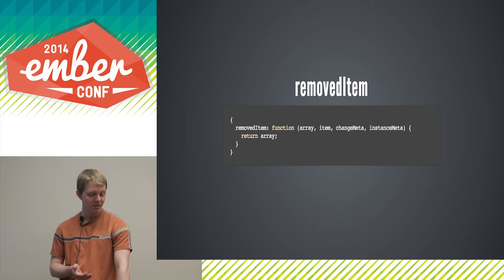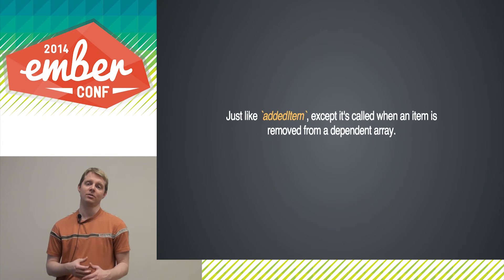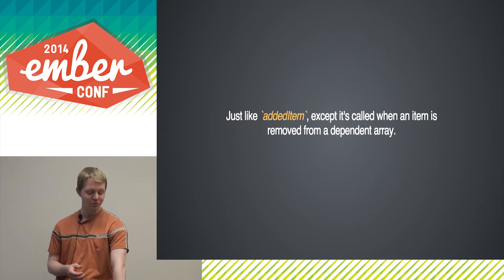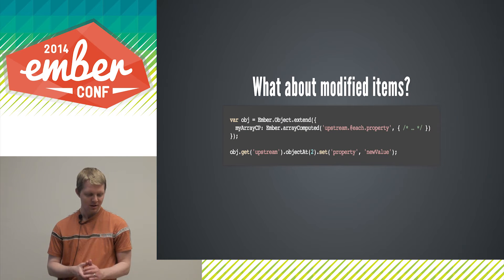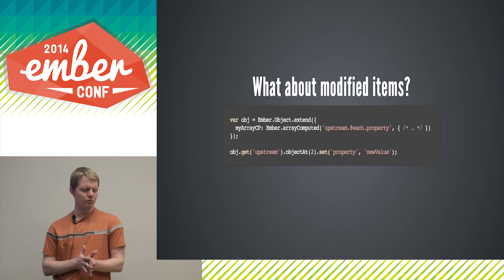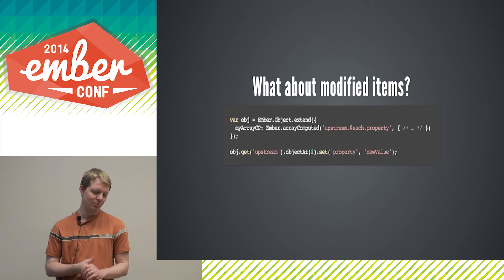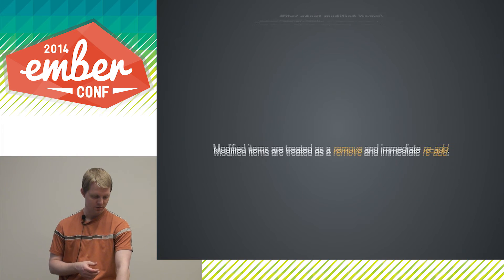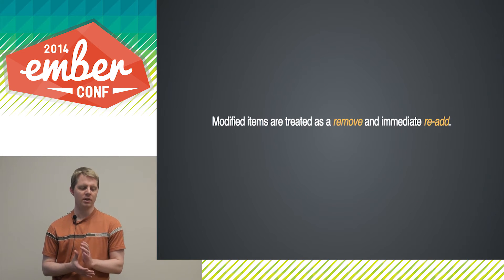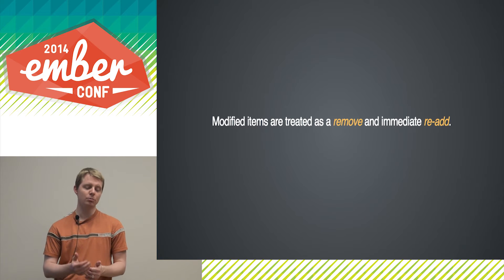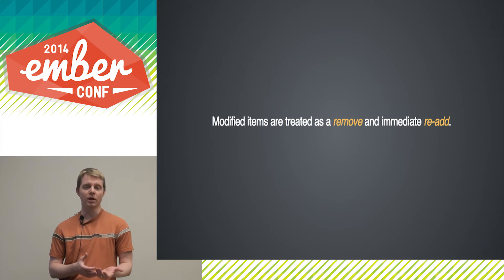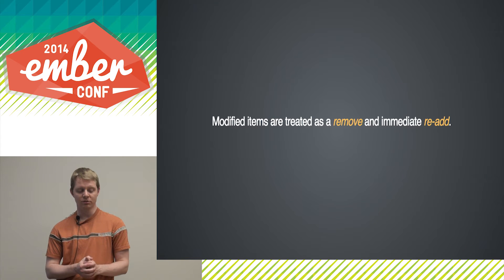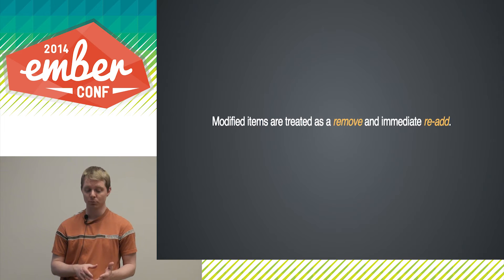removedItem looks almost exactly the same as addedItem — the only difference is it's called when an item is removed from a dependent array instead of when an item is added. As for modifying items: all modifications in array computed are treated as a removal followed by a subsequent re-add. This is why we're able to get property modifications to work even though we only passed callbacks for adding and removing items.